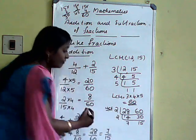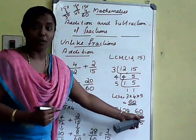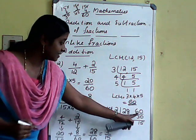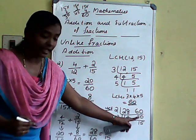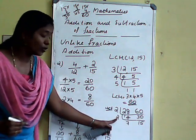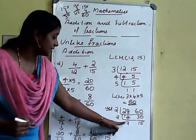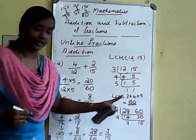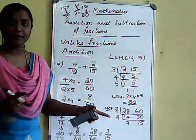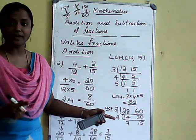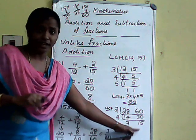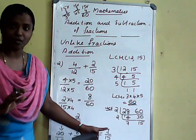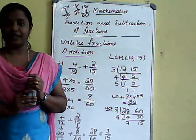HCF of 28 and 60: 2 goes into 28 fourteen times and into 60 thirty times. Again 2 is common — giving 7 and 15. Any number common between 7 and 15? No, they are co-primes. So the simplest form is 7 by 15. That is the simplest form of 28 by 60.